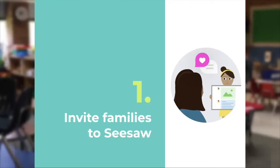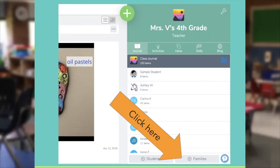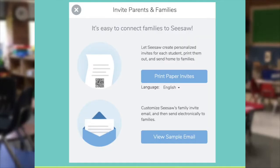Tip number one: invite families to Seesaw if you haven't done so yet. This is really easy to do. When you are signed into your Seesaw class as a teacher, on the bottom right you'll see a button that says 'Add Families.' Go ahead and click that button. Then you will have two options: you can print paper invites to send home with students, or you can view a sample email that you would copy and paste into any email service that you use to invite families electronically.